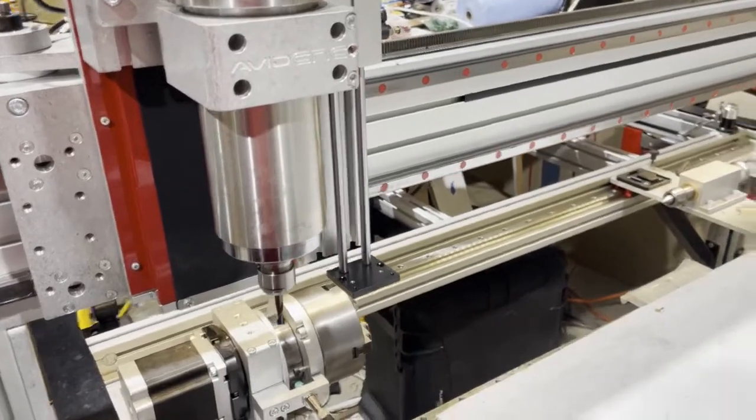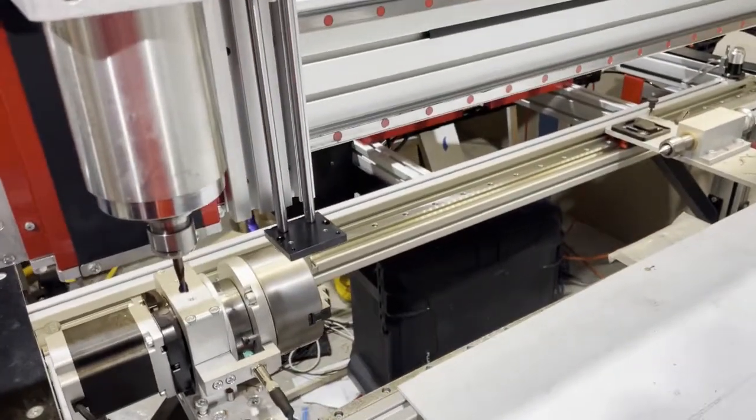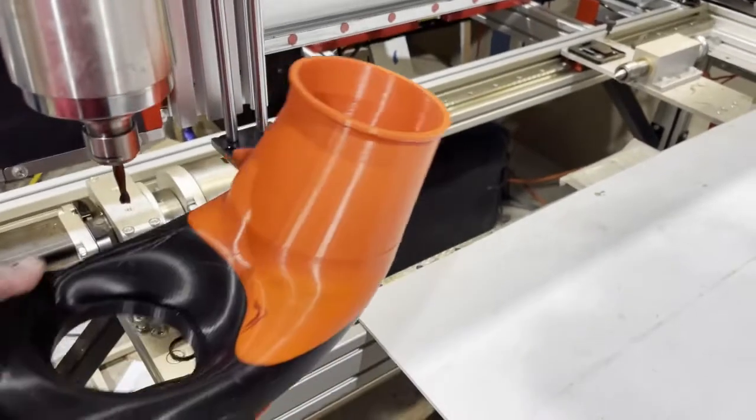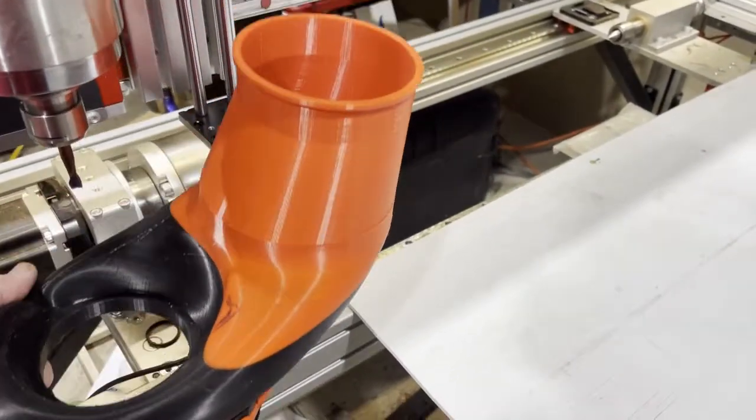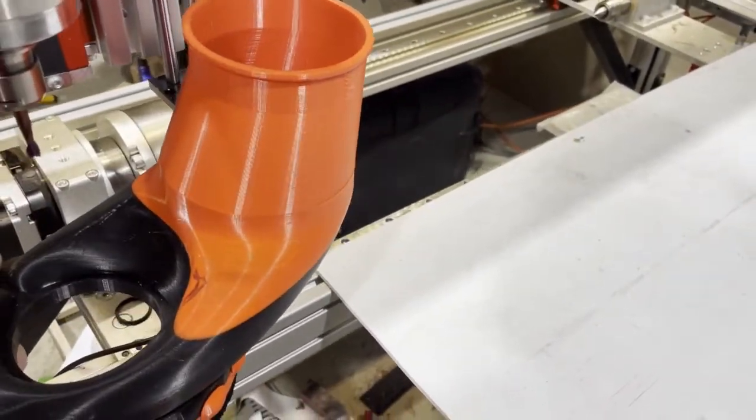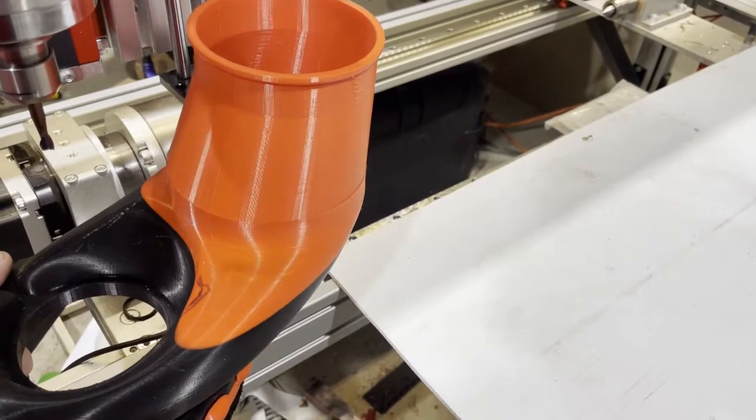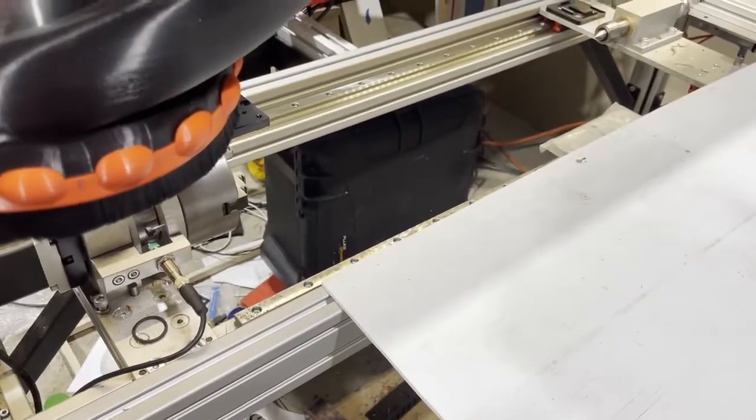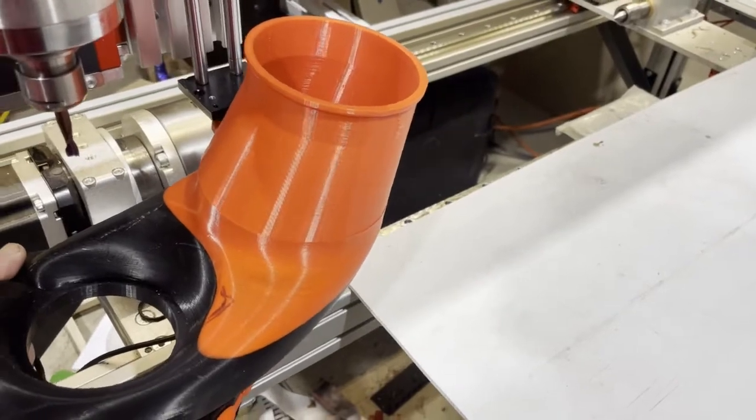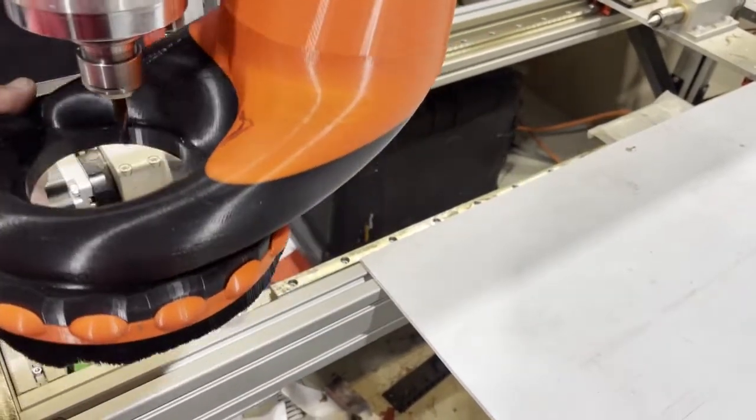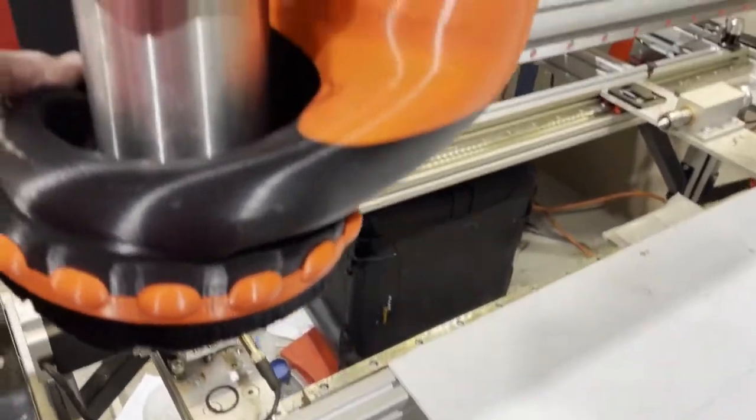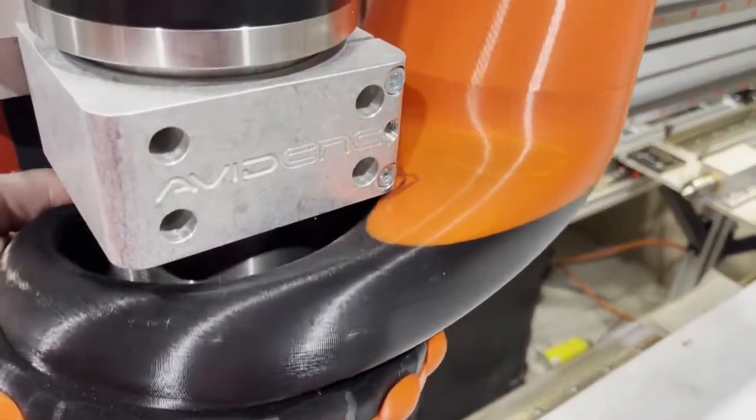A little update video on the automatic tool changer on the Avid CNC. Now this is a dust shoe I have and I'm having a pneumatic driven lift so it lifts up out of the way for the ATC, but unfortunately this one that I made when it comes to the actual lift to get it in the way, it bangs into the spindle bracket.